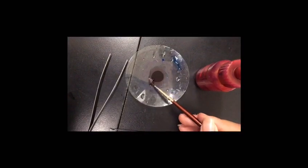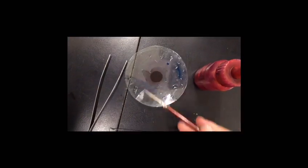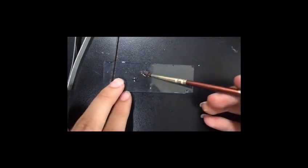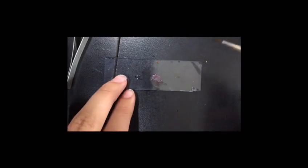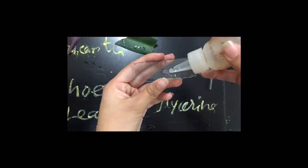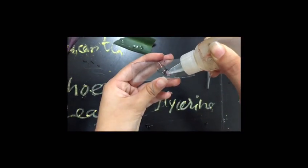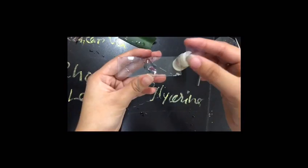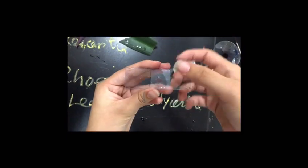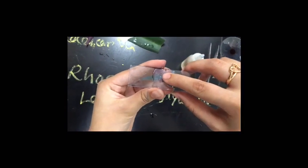Then we transfer it to the glass slide using a small brush. Then we need to add one or two drops of glycerin and cover it with the cover slip at an angle of 45 degree to avoid the air bubble.